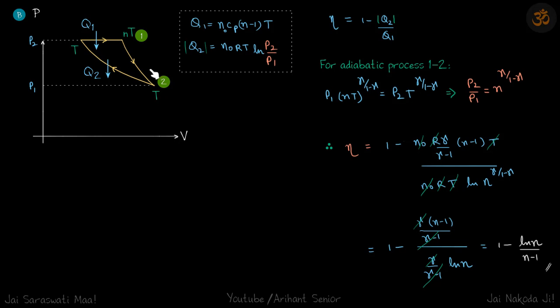So to find the ratio of P2 by P1, we will take this adiabatic curve where we know the ratio of temperatures. So we will find the ratio of pressures.